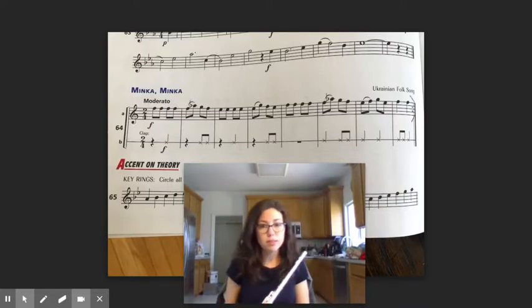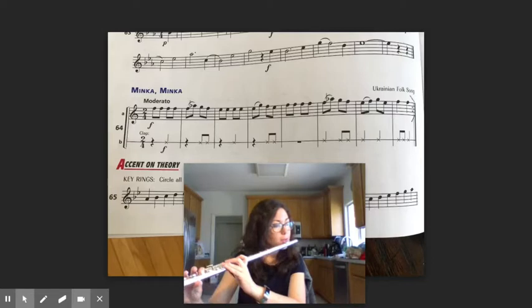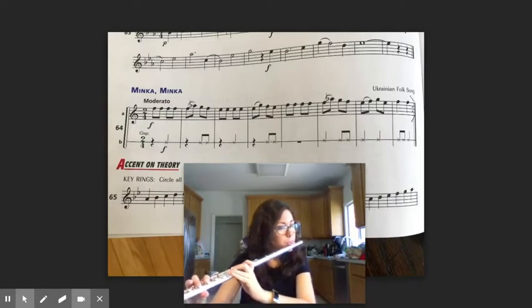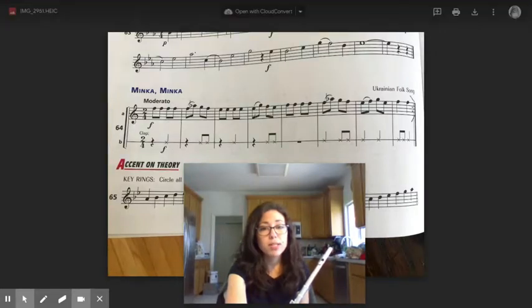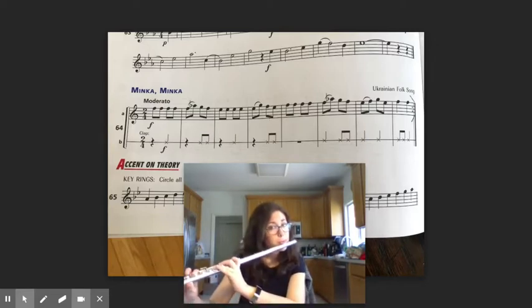So watch out, especially in this fourth measure. You might have gotten the first note correct, but make sure both of them are that other note. For flute, C natural. For trombone, E natural. For saxophone, C-sharp. For clarinets and trumpets, F-sharp. So make sure that whole measure [plays correctly]. You don't want [plays incorrectly] or [plays incorrectly]. I hope you hear the difference in those three. You want the first way.